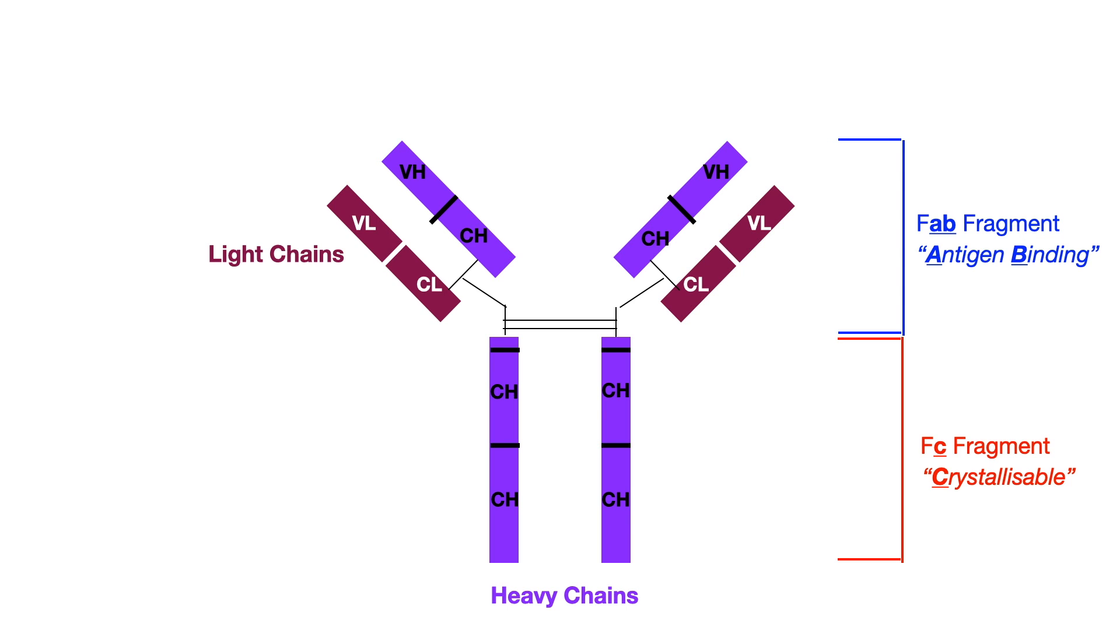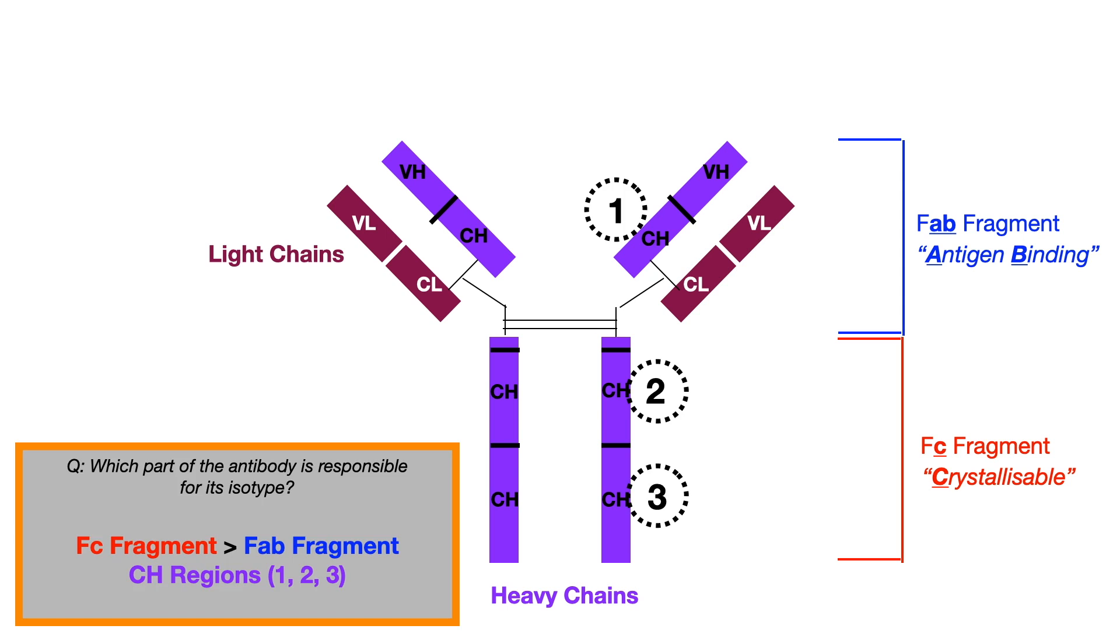The highest yield thing to know for USMLE and COMLEX is that test writers like to ask you which region of the antibody is responsible for which function. And so, a classic test question involves numbering different areas of the antibody. For example, as you see here. Now, I've only drawn three numbers in, but you really could have drawn numbers going up to six. And then what the test writer will do is they will ask you which combination of numbers or which singular number is responsible for some function. The highest yield question that I can think of is shown on the slide.